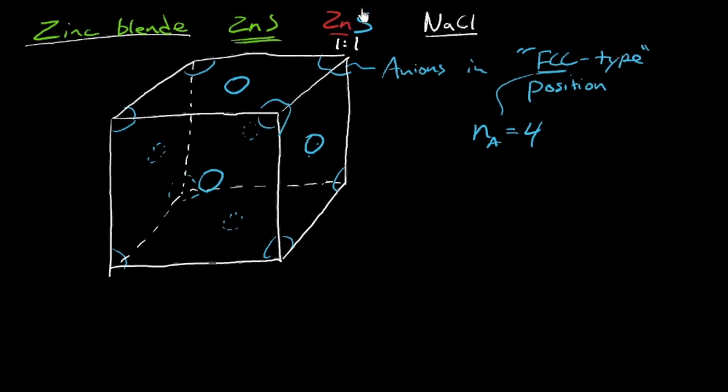And the size ratio here, the radius of the cation to the radius of the anion. If you looked it up for zinc and sulfur, you'd find that it positioned zinc into those tetrahedral interstitial sites. And we've seen those. And we can see them in the same positions that carbon atoms occupy in diamond cubic.